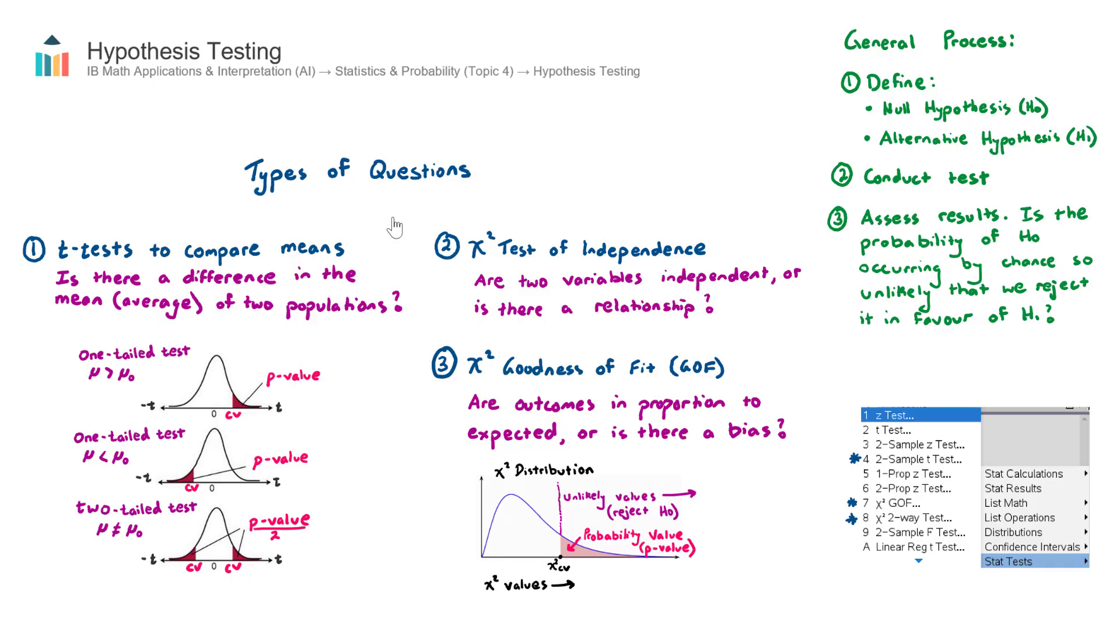So back to our classroom example, our null hypothesis would be that there is no difference between the average scores. The chi-squared test of independence is that the two variables are independent. The number of ice creams sold does not depend on the temperature. Or the chi-squared goodness of fit is the coin is not biased. We should expect even outcomes between heads and tails. We define this status quo, the null hypothesis.